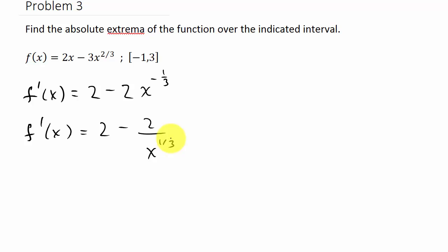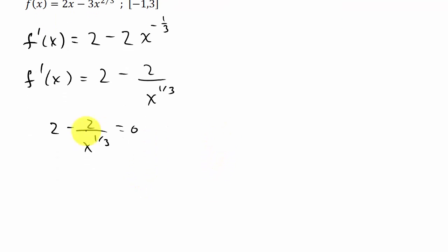Now we need to set this equal to 0 and solve. So I've got 2 minus 2 over x to the 1/3 equals 0. I'll move this term over: 2 equals 2 over x to the 1/3.